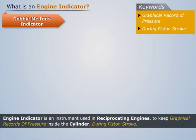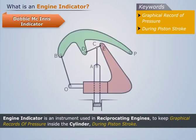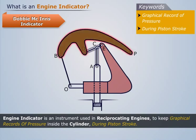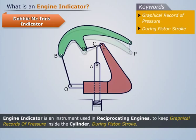Dobby-McInn's indicator. Its line diagram is similar to the Thomson's indicator. The only difference is that the link AC gives motion to the link DE, instead of link BD. With variation in pressure, it works like this.